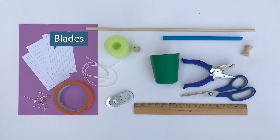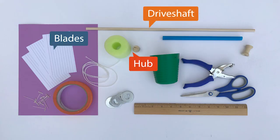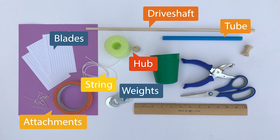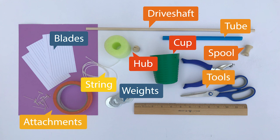To complete this activity, you'll need to gather materials from around the house to construct your MacGyver Windmill. Make sure you check with an adult on what you're allowed to use. Here are the main parts you'll need: blades, a hub, a drive shaft, a tube for holding the drive shaft, items to attach all parts such as pins or tape, string, weights such as coins or washers, a cup to hold the weights, a spool or something to wrap the string around, scissors, a hole punch, a ruler, and any other tools you might want to use. You'll also need a fan to see how well your MacGyver Windmill performs.